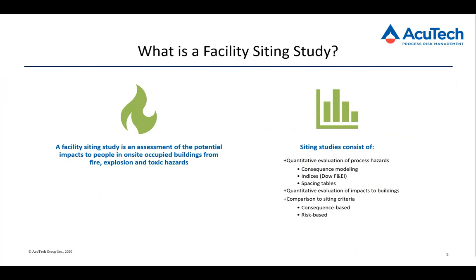So what is it we're looking at when we're doing a facility siting study? What we're doing is evaluating process hazards and taking a look at what the impacts of these process hazards can be to a structure and to the occupants of that structure. Siting studies consist of a quantitative evaluation of those process hazards — things like explosion overpressures, fire thermal radiation, a flammable gas cloud, or a toxic gas cloud. We usually use consequence modeling for that.